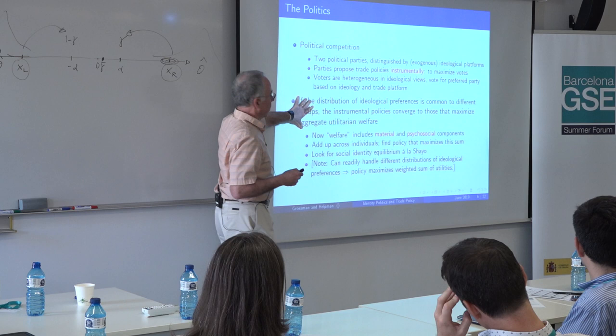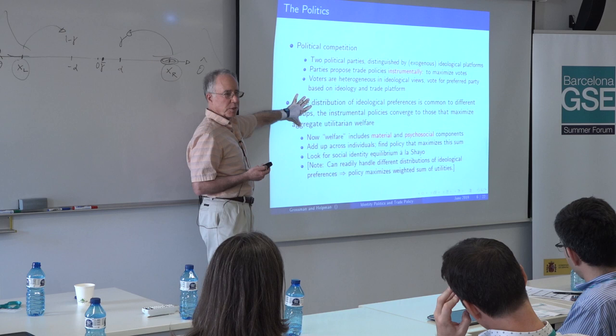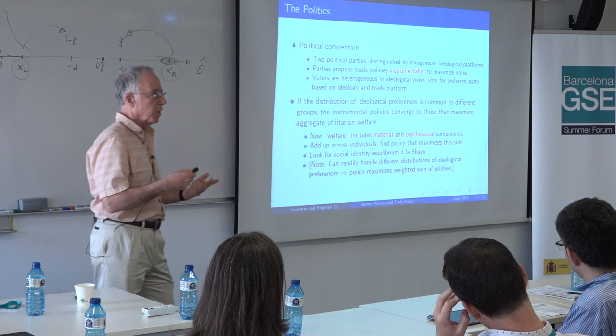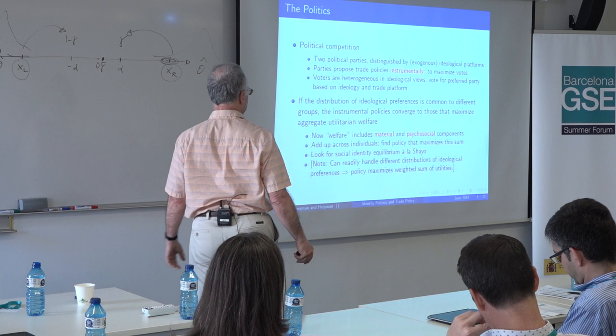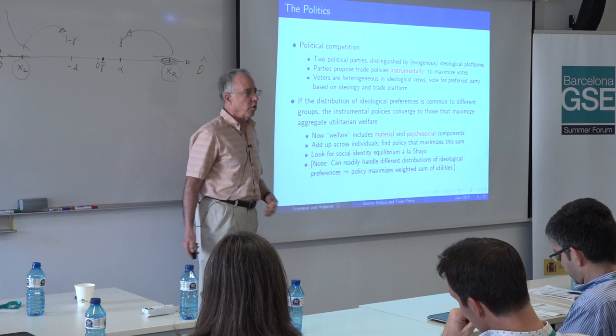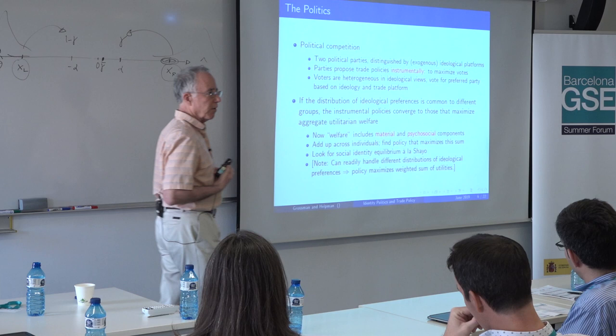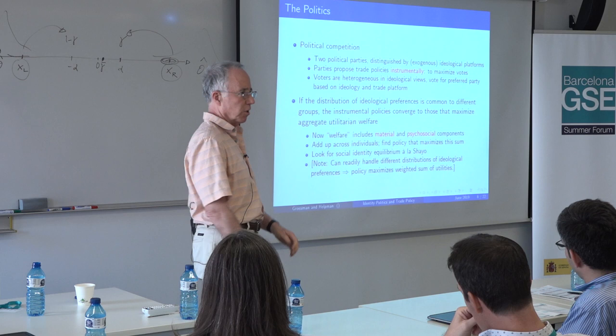We're going to maximize utilitarian welfare, because that's what the political model tells us to do. The new component is that welfare now includes not only material elements but these psychosocial components, so we have to reevaluate what trade policy maximizes. We're going to look for a social identity equilibrium in the spirit of Shayo, making sure that the trade policies we get are consistent with the pattern of social identification that underlies those preferences, that underlies the election, that underlies the trade policies.